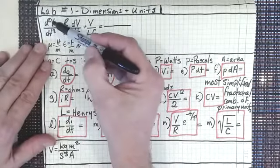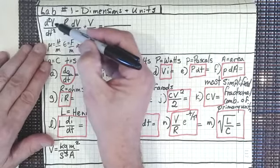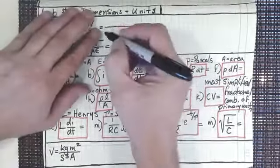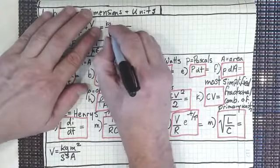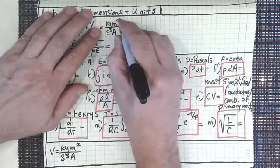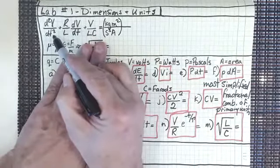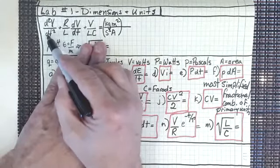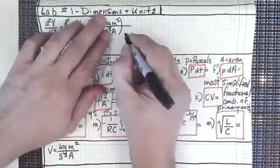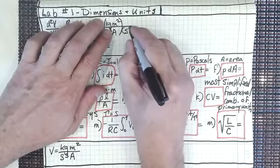The first term is d²v/dt². The square is on the d, not on the v, and down below the square is on the dt. So the volt goes in the numerator as kilogram meters squared over seconds cubed amp. Then we have dt squared — t is time, so even a microsecond squared is still seconds squared. That gives us seconds squared in the denominator.